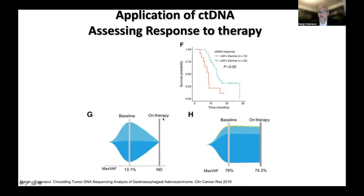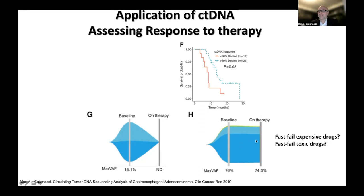One example shows a patient who started therapy with a maximum allele frequency of 13.1% at baseline, and after a few weeks of therapy had complete reclearance of their circulating tumor DNA by the Guardant 360 test. In contrast, another patient had a really high burden of disease at 76% and it didn't really change much on therapy — two negative prognostic biomarkers. Patients who had a more than 50% decline tend to have a better survival curve compared to those who did not. This can be a prognostic biomarker. Because we tend to do CAT scans after two to three months, we could learn that therapy is not working much sooner — within two to four weeks — by doing this circulating tumor DNA blood draw. This is not being routinely done as of March 2023, but studies are looking at this concept.